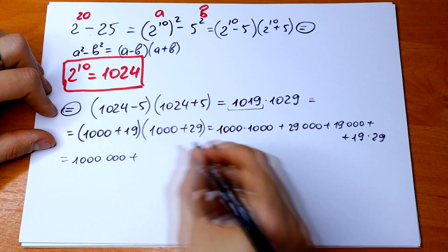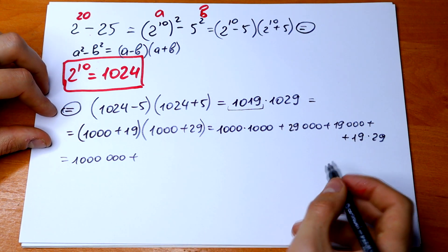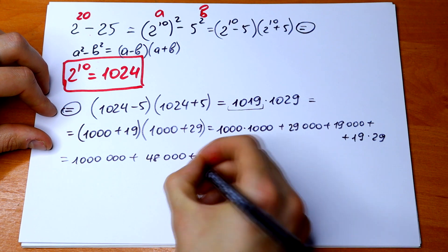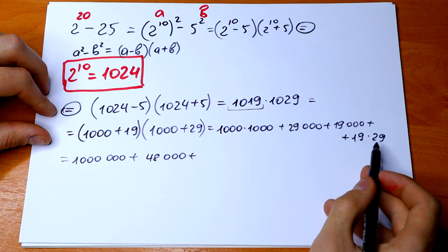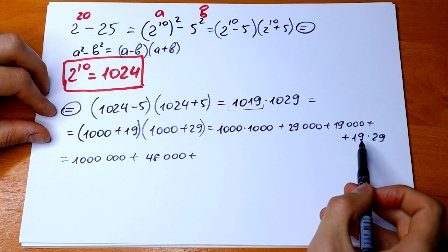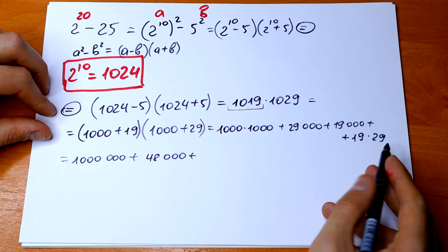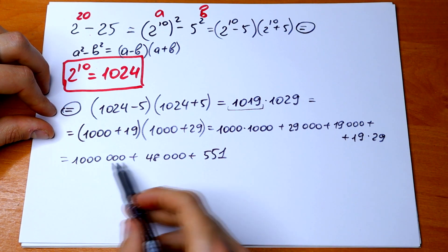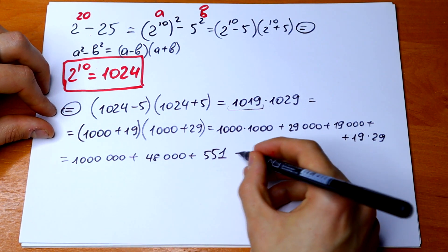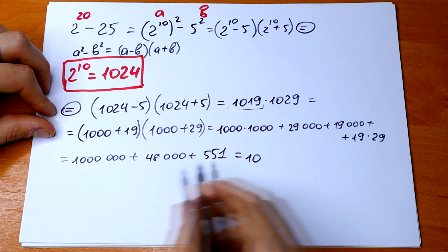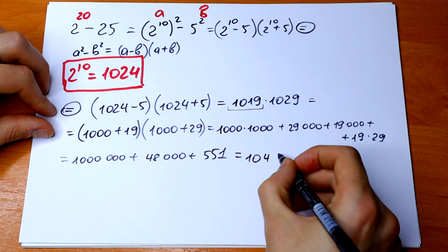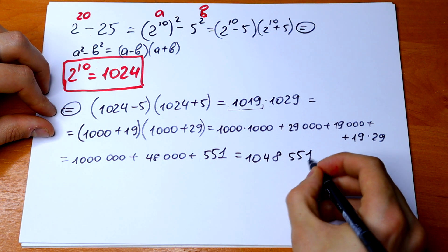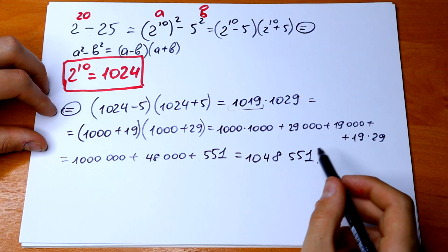So let's calculate this. 1,000,000 plus 48,000 and 551. And this is our answer: 1,048,551.